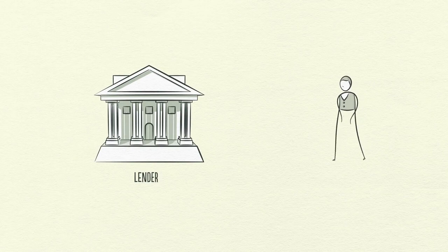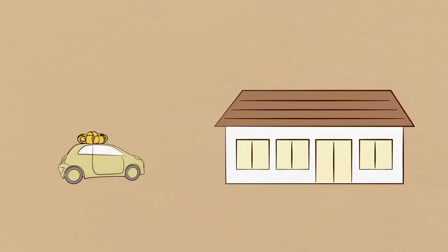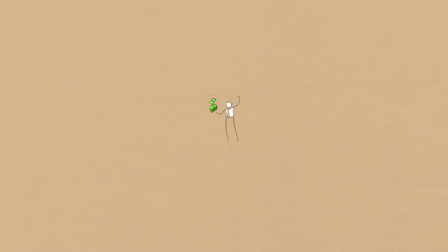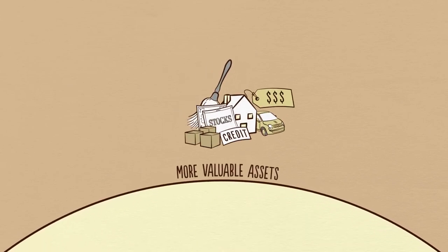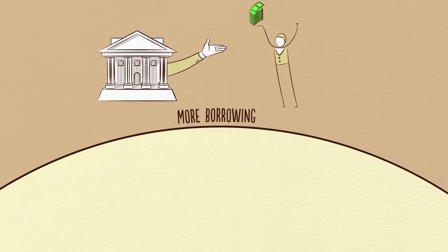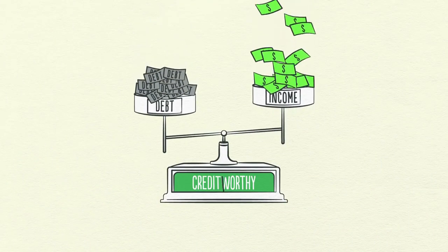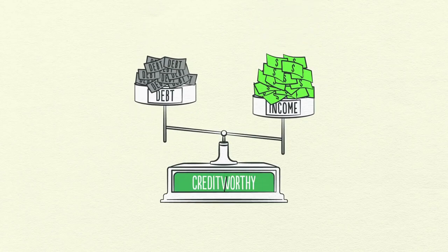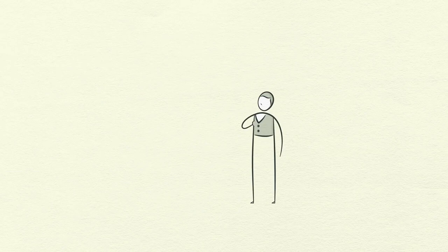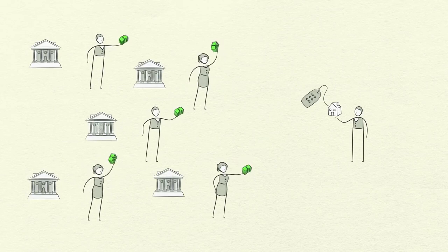Despite people becoming more indebted, lenders even more freely extend credit — because everyone thinks things are going great. People are focused on what's been happening lately: incomes have been rising, asset values are going up, the stock market roars. It pays to buy goods, services, and financial assets with borrowed money. When people do a lot of that, we call it a bubble. So even though debts have been growing, incomes have been growing nearly as fast to offset them. People borrow huge amounts of money to buy assets as investments, causing their prices to rise even higher.